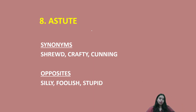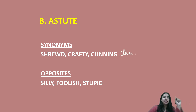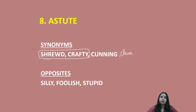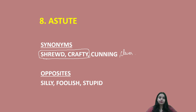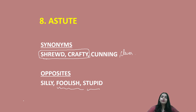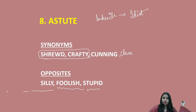Then you have astute. Astute ka matlab hota hai somebody who is very clever. Synonyms: clever, cunning, crafty, shrewd — these are all very important words, especially shrewd and crafty. Astute matlab jo bahut chalak ho. The opposite would be someone who is very silly or foolish. If someone is clever, the opposite would be a fool — stupid, foolish, idiot — someone who does idiotic things. Idiot ko hum imbecile bhi kehte hain: I-M-B-E-C-I-L-E. So that is astute, which means very clever.